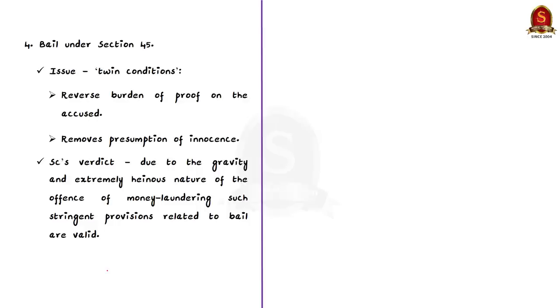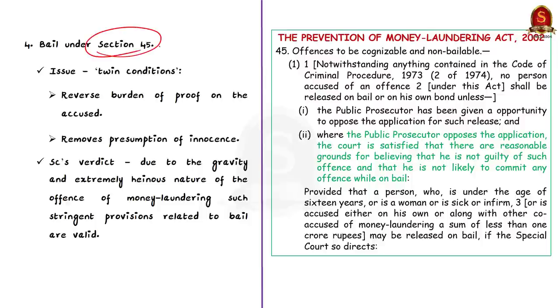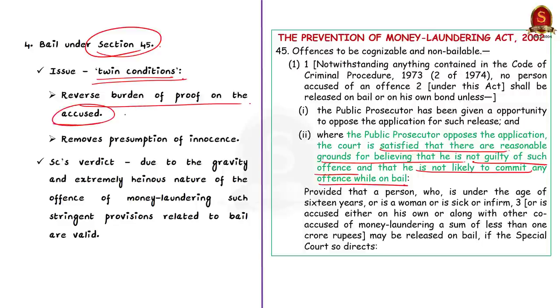Now let me come to the last challenging provision. This is regarding the bail. Section 45 deals with the grant of bail. The problem is with the twin conditions in the section. One condition is that the court must be satisfied that there are reasonable grounds for believing that the accused is not guilty of an offence. The second condition is that the court must be satisfied that he or she is not likely to commit any offence while on bail. This provision puts the burden on the accused person to prove that he is not guilty and will not commit offence, and that is to just get a bail. It imposed a reverse burden of proof on the accused.